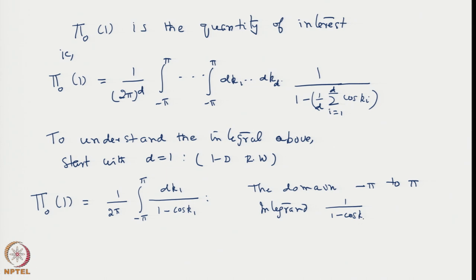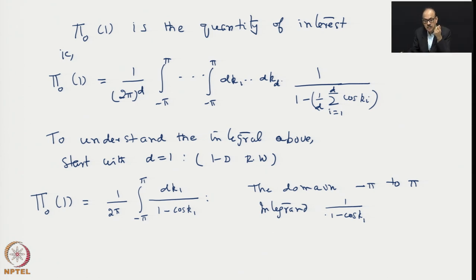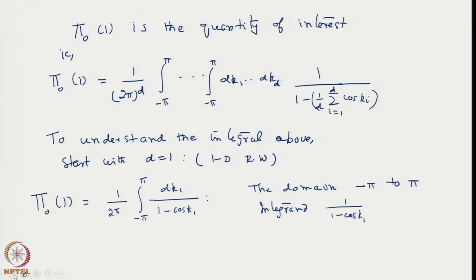The domain of integration is -π to π, and the integrand is 1/(1-cos(k_1)). The domain includes 0, and at k_1=0, cos(k_1) becomes unity, so 1-cos(k_1) becomes 0. Hence we have 0 in the denominator and the integration becomes doubtful. However, having 0 in the denominator does not necessarily make the integral divergent — we must examine the order of this singularity.